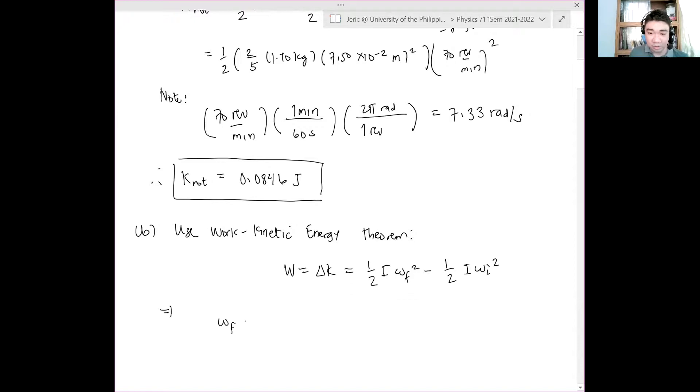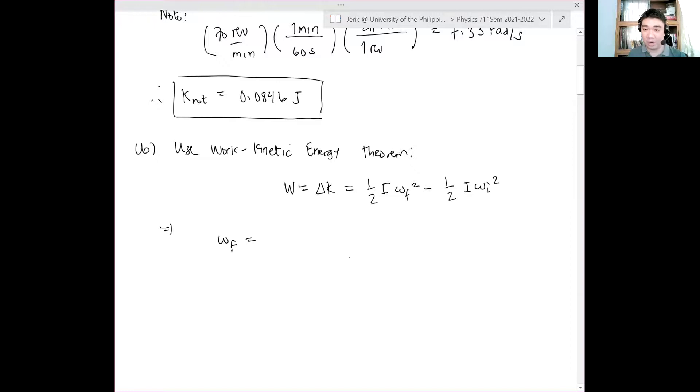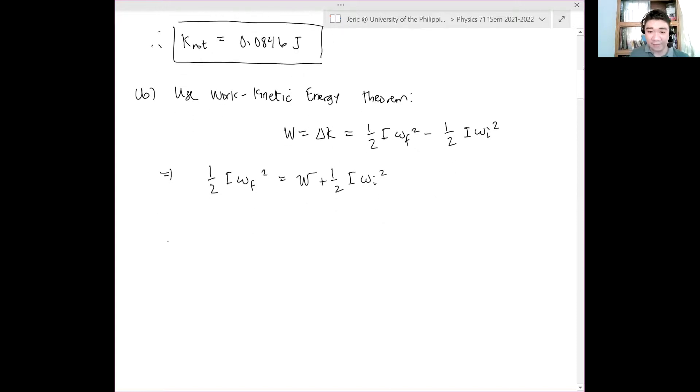So solving for omega f, please verify this. One half I omega f squared is simply capital W plus one half I omega i squared. And then solving for omega f gives us: omega f is simply omega i squared plus 2 capital W over I, raised to one half. Correct?